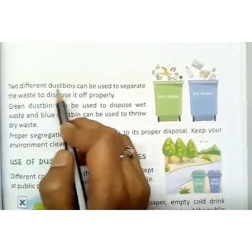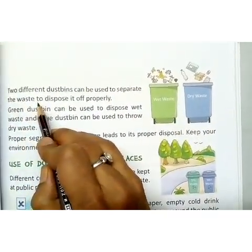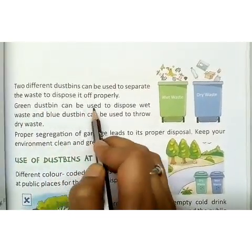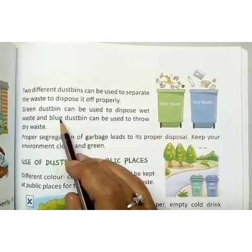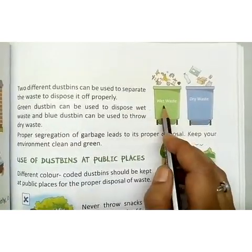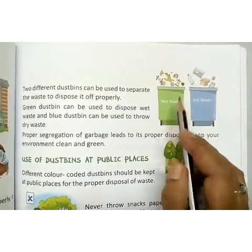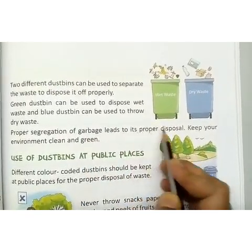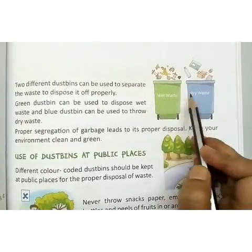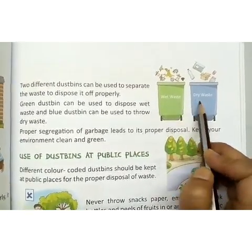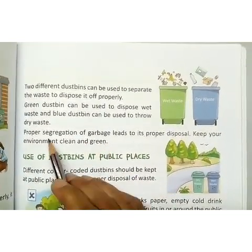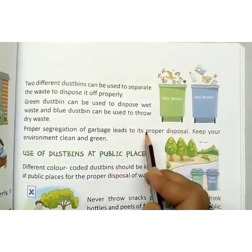Now come to page number 103. Two different dust bins can be used to separate the waste and dispose it off properly. Green dust bins can be used to dispose wet waste, and the blue dust bin can be used to throw dry waste. Wet waste and dry waste should be disposed off separately in different dust bins. Proper segregation of garbage leads to its proper disposal. Keep your environment clean and green by proper segregation of the garbage, and then it can be properly disposed off.